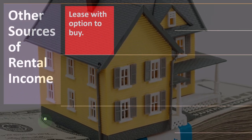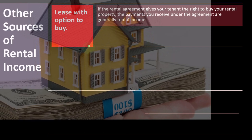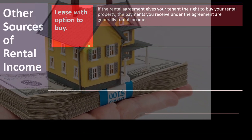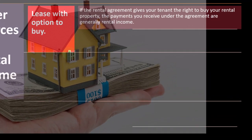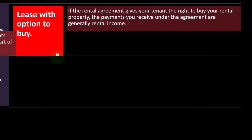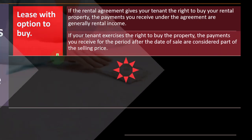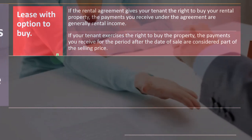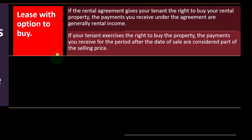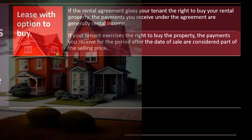Other sources of rental income. Lease with option to buy: if the rental agreement gives your tenant the right to buy your rental property, the payments you receive under the agreement are generally rental income. If your tenant exercises the right to buy the property, the payments you receive for the period after the date of sale are considered part of the selling price. This can get messy because rental income is subject to passive activity rules, while a sale of the property might be a capital gain situation with differing income regulations.